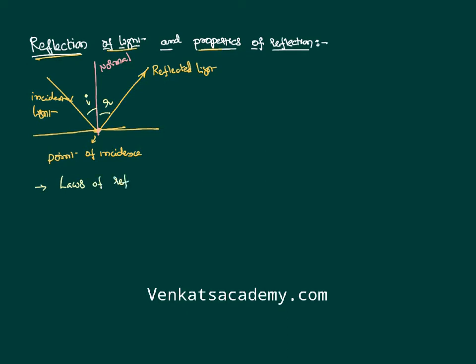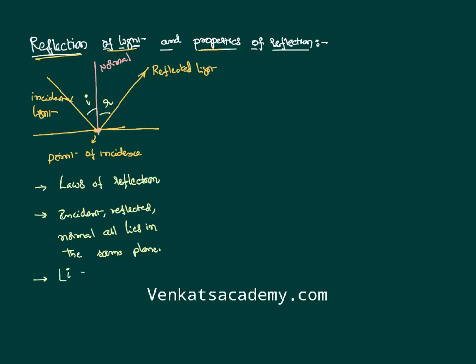The laws of reflection are simple — there are two laws. The first law states that the incident ray, the reflected ray, and the normal all lie in the same plane. The second law states that the angle of incidence is equal to the angle of reflection; they are one and the same.